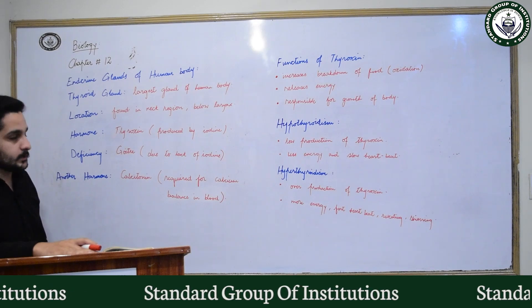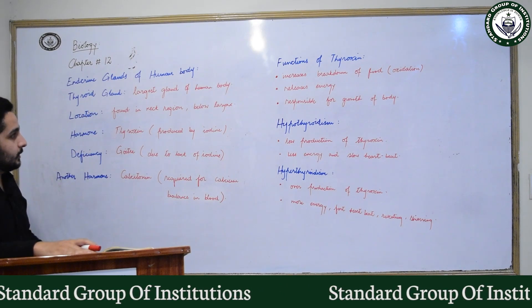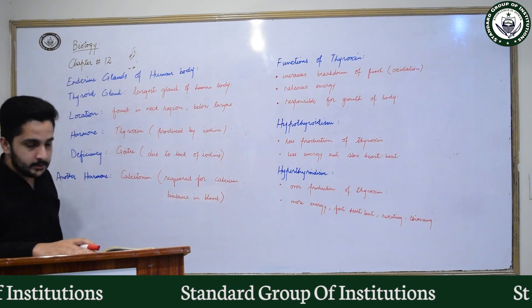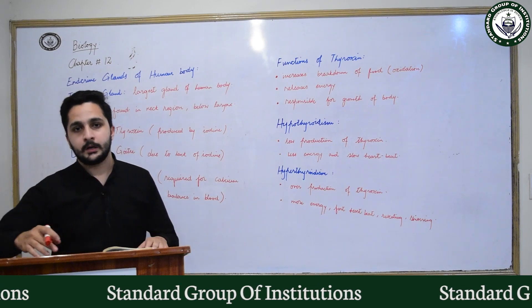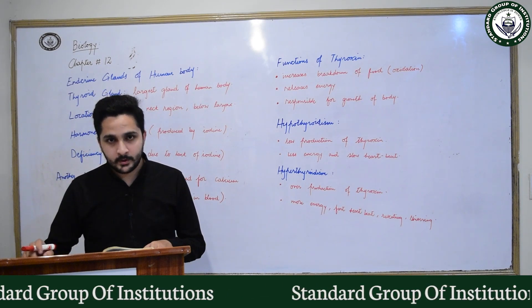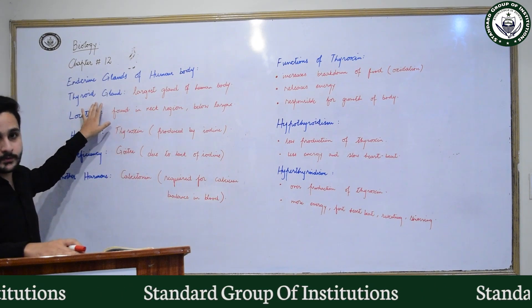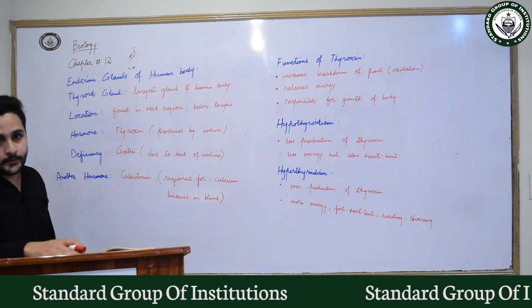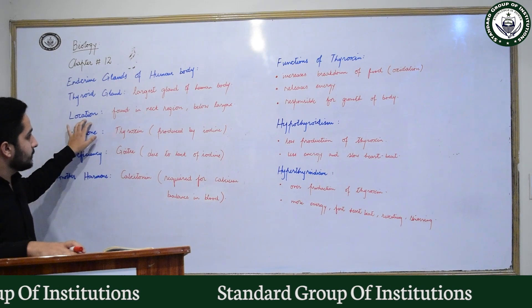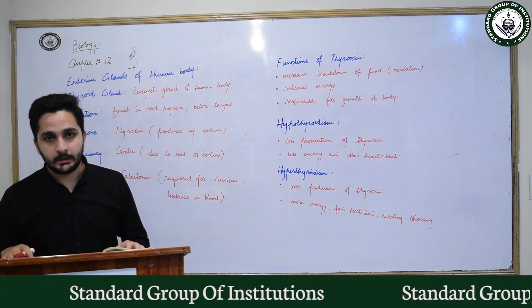Today we will start learning about the other gland — the thyroid gland. The thyroid gland is the largest gland in the human body, larger than the adrenal gland, pituitary gland, or any other gland. Its location is in the neck region.